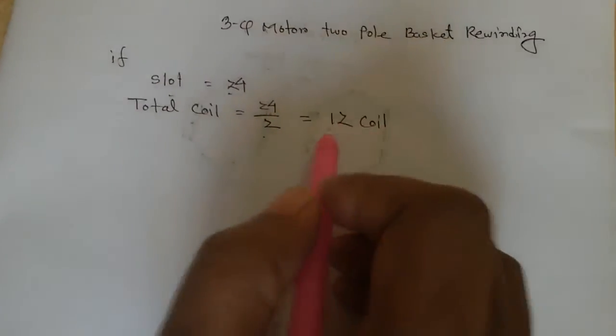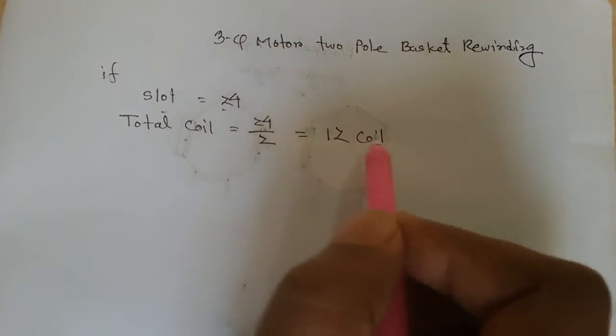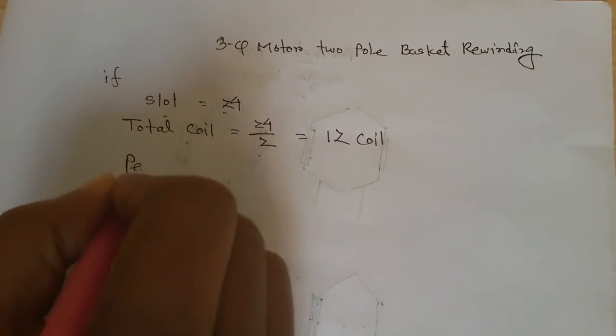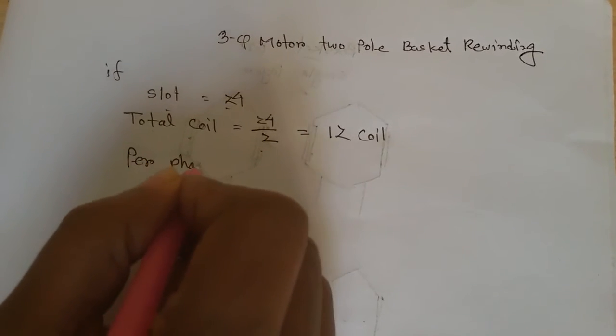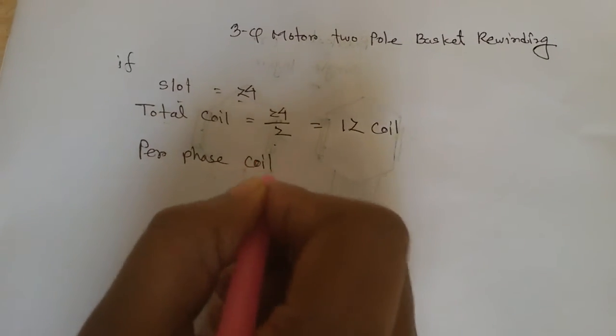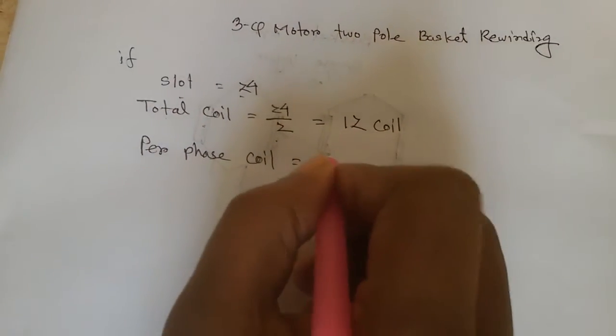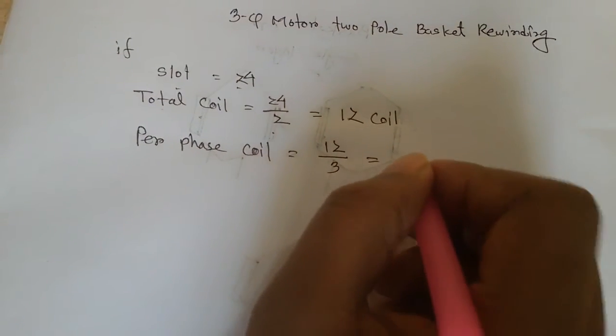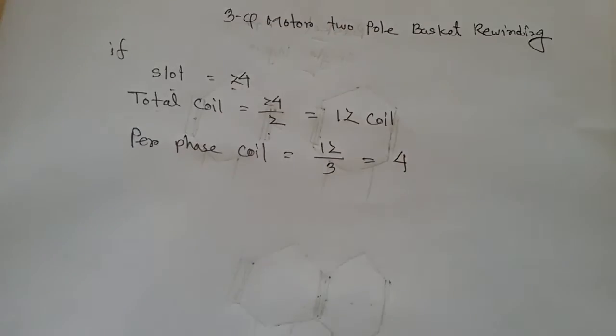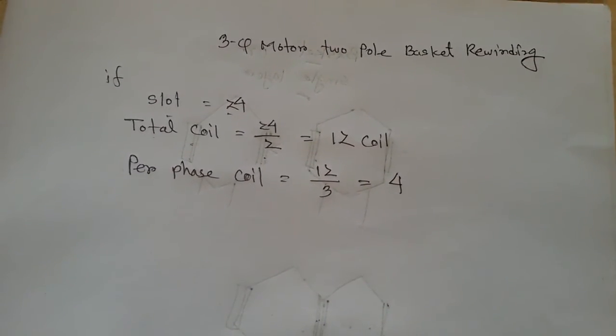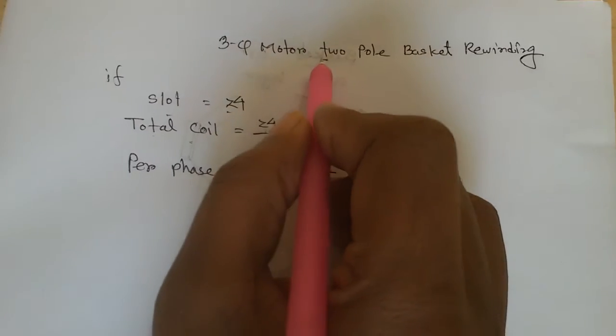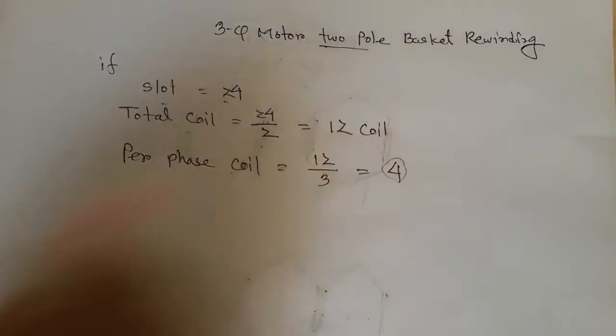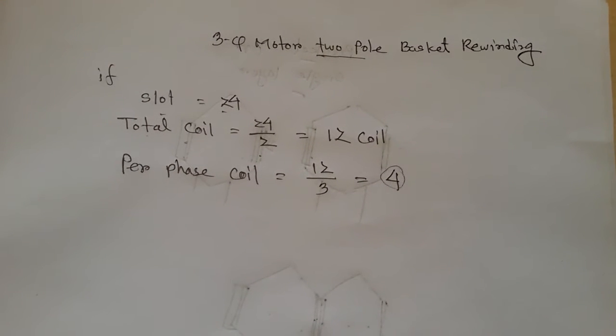This 12 coils is divided by 3 phases. So per phase coil is 12 total coils divided by 3 equals 4. Per phase coil is 4.